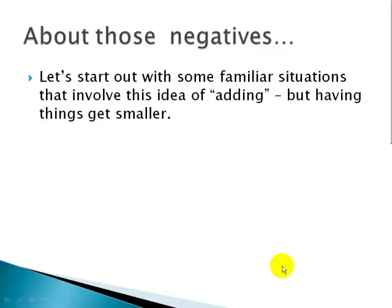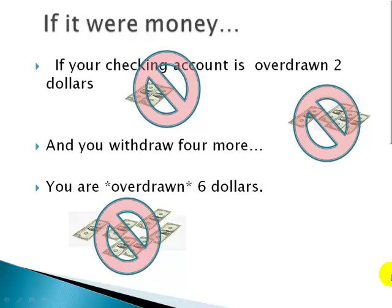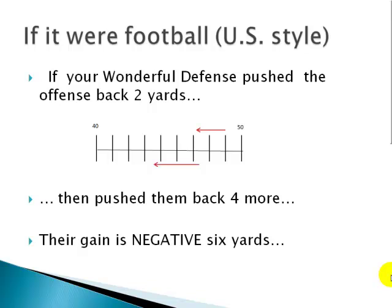Now about those negatives. Let's start with familiar situations that involve adding but having things get smaller. If it were money, if your checking account is overdrawn $2 and you withdraw $4 more, you are overdrawn $6. If it were football US style, if your defense pushed the offense back 2 yards and pushed them back 4 more, they've lost 6 yards, or their gain is negative 6 yards.